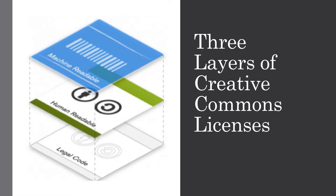The first layer is the legal code. This is the layer that gives a Creative Commons license its legal standing and would be what your lawyer could take to court if someone used your work inappropriately. The second layer is what Creative Commons refers to as the Commons deed — these are the user-friendly webpages that you and I reference when we are trying to figure out which CC license is best for us, or what a Creative Commons license means on someone else's work.